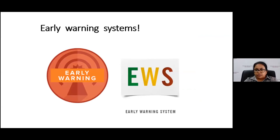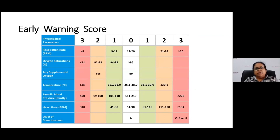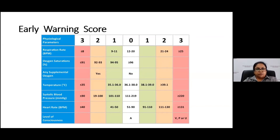Early warning scoring systems have been in practice for several decades, started in Australia and widely used in Europe and beyond. These systems incorporate basic vital physiological parameters: respiratory rate, oxygen saturation, whether the patient is on supplemental oxygen, temperature, blood pressure, heart rate, and level of consciousness. As each physiological parameter deviates from normality, it is given a higher score. For example, a respiratory rate within the normal range of 12–20 scores zero, but tachypnea or bradypnea score higher. A total score is then calculated across all parameters.